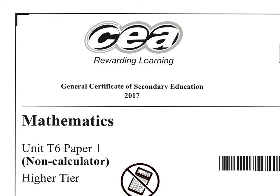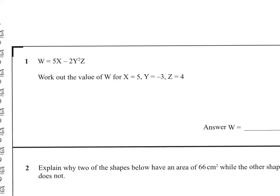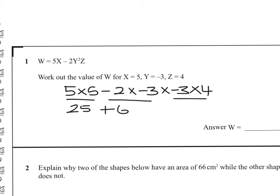T6 2017 non-calculator paper. Substituting in the values: 5x, 5 times 5, minus 2 times y squared, and y squared is minus 3 times minus 3 times z, which is 4. 5 times 5 is 25, minus 2 times minus 3 is plus 6, and minus 3 times minus 4 is minus 12. 6 times minus 12 is minus 72, and 25 take away 72 is minus 47.